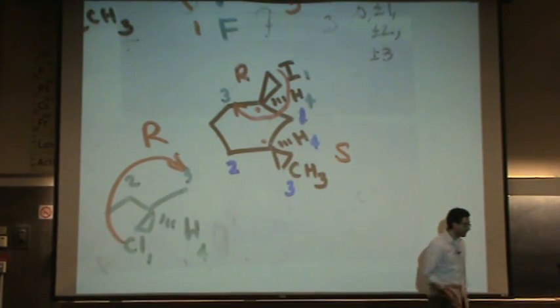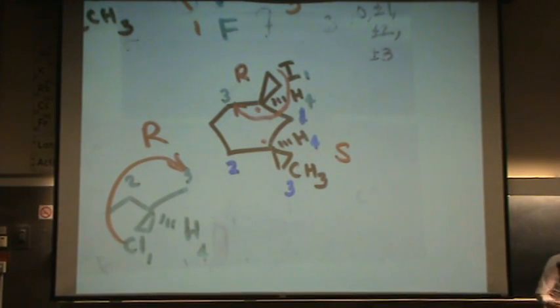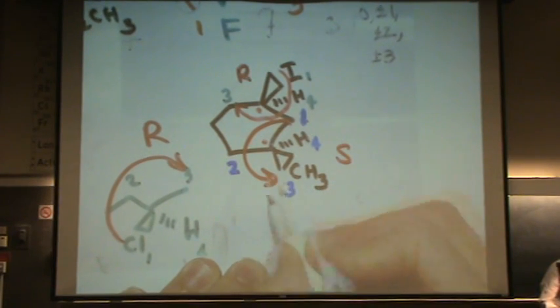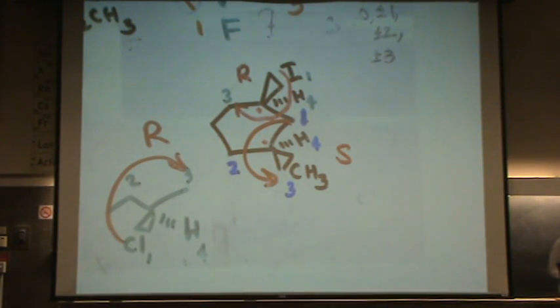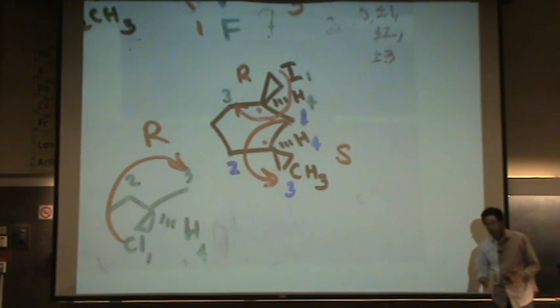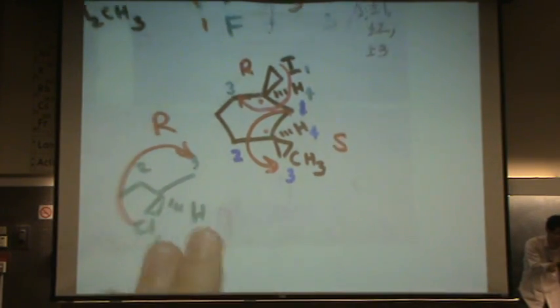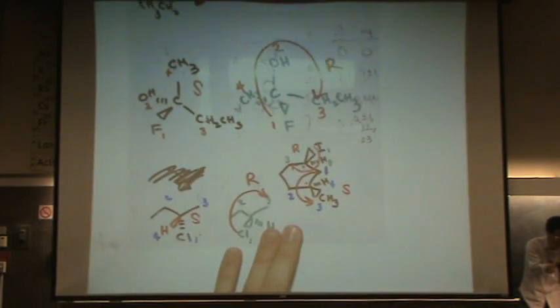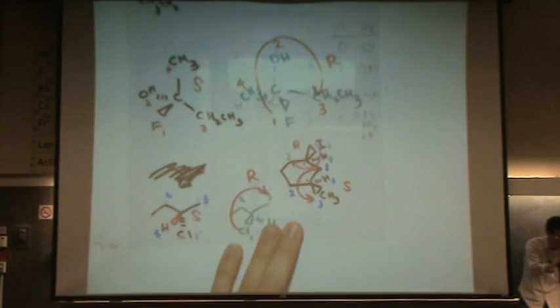The paper method is also easy here because four is already in the back. You're turning to the left. Any questions on any of these? All right, thank you.